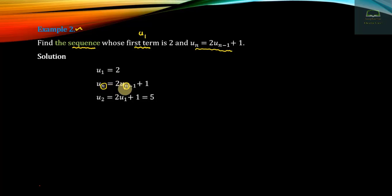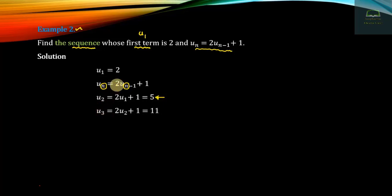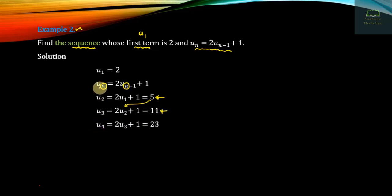u2 equals 2 times u1 plus 1, which gives us 2 plus 1 equals 5. Then u3 equals 2 times u2 plus 1 equals 2 times 5 plus 1 equals 11. And u4 equals 2 times u3 plus 1 equals 2 times 11 plus 1 equals 23.